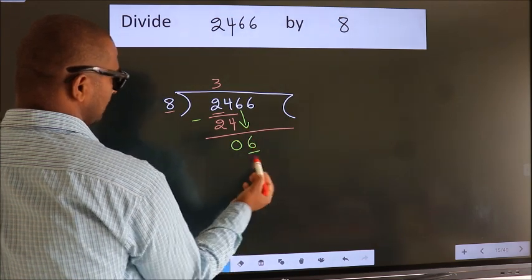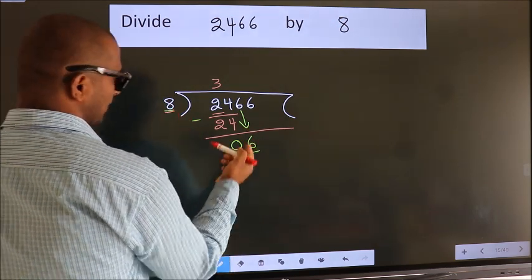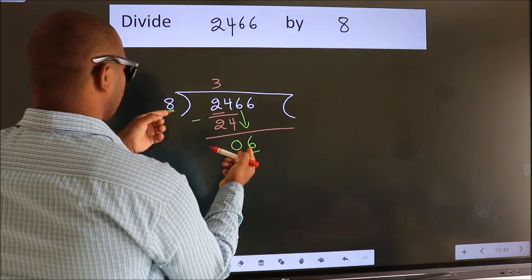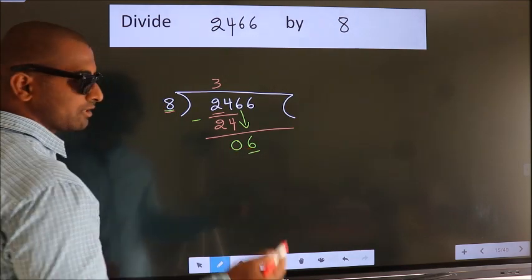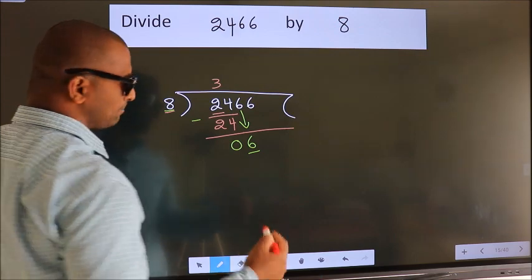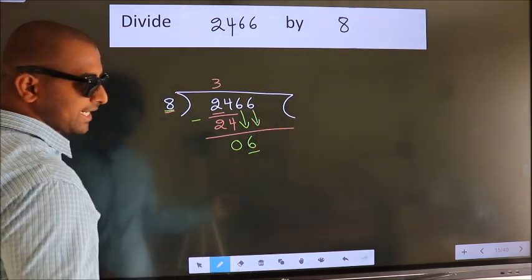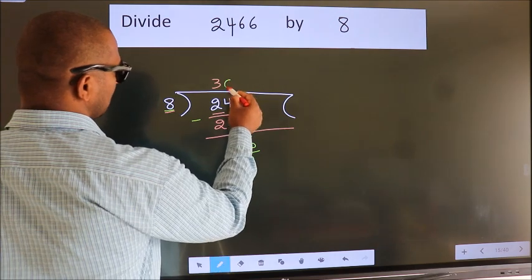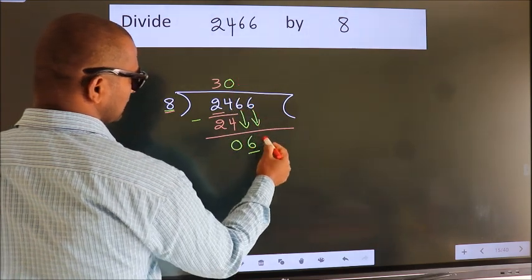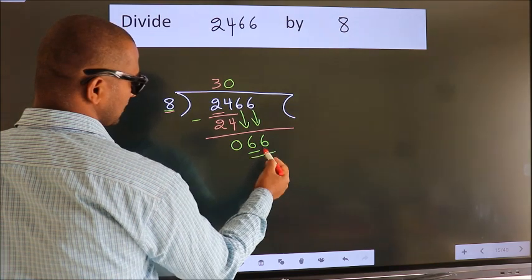Here we have 6. Here 8. 6 is smaller than 8, so we should bring down the second number. And the rule to bring down the second number is put 0 here. Then only we can bring down this number. So, 66.